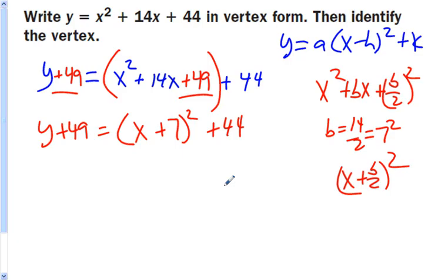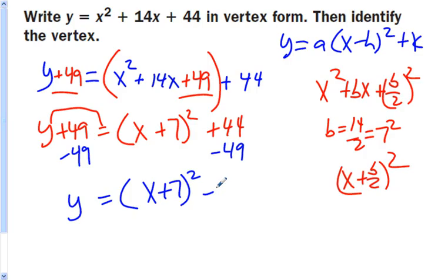The last step I need to do is get rid of this plus 49 to give me y equals. So to get rid of a plus 49, I'm just going to subtract it from each side. That leaves me with y equals, parenthesis, x plus 7, parenthesis squared, and then 44 minus 49 is a negative 5.